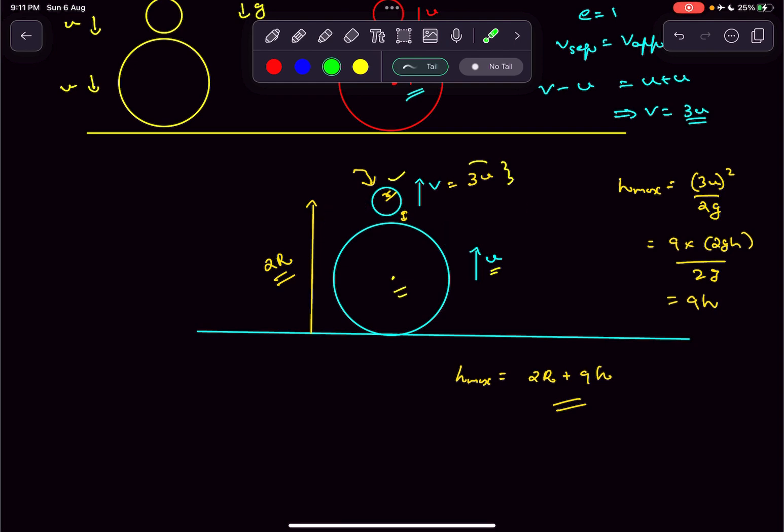But because of the fact that this mass small m is much smaller than the mass capital M, it looks as if this 3u is pretty high. But actually, the loss in kinetic energy of the big ball is equal to the gain in kinetic energy of this small ball.